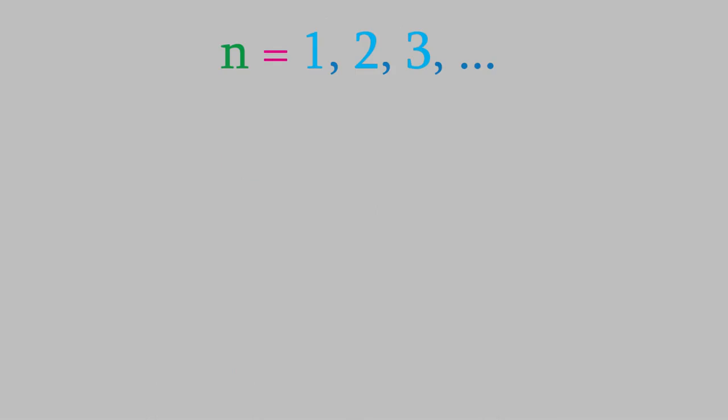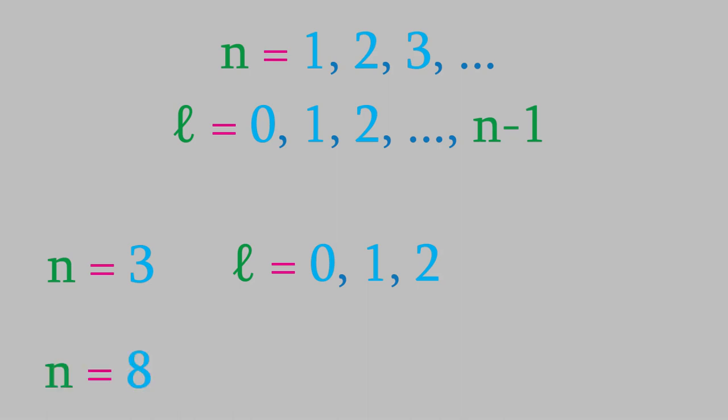Unlike n, L can't be just any integer. It can only be as high as n minus one. So, for instance, if an electron has n equals three, then L can only be as large as n minus one, which is two. So, that means L can be zero, one, or two, but not higher. If n equals eight, then L can be zero, one, two, and so on, up to seven.